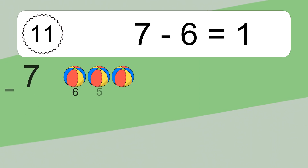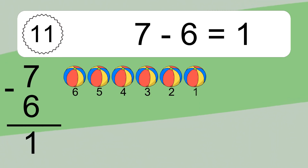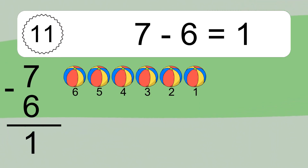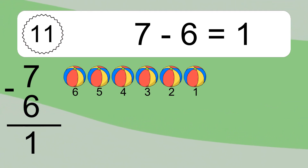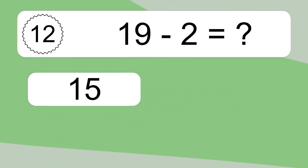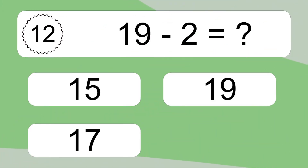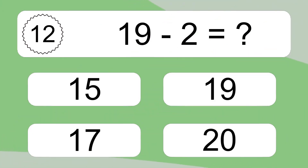7 minus 6 equals 1. Let's count it. 6, 5, 4, 3, 2, 1. 19 minus 2 equals what?